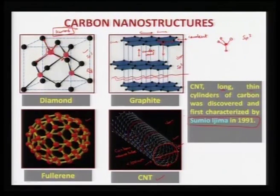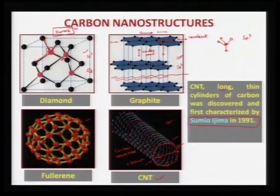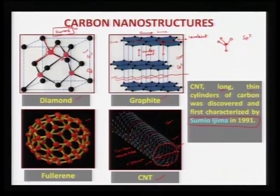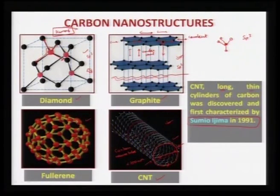We also have a structure of amorphous carbon, though we will not be covering that in detail here. The widely used allotropes of carbon are: diamond (sp³ hybridization, one of the hardest known materials, very high thermal conductivity), graphite (sp² hybridization, widely used as a lubricant, with covalent bonds along the layer and weak van der Waals forces along the vertical direction — layers can easily glide over each other when stress is applied). Then we have fullerene structures.